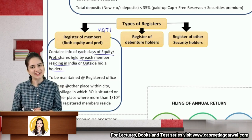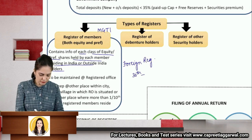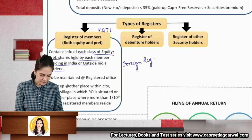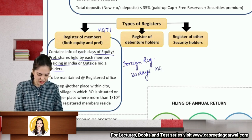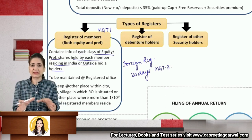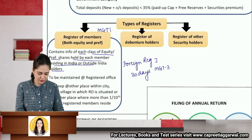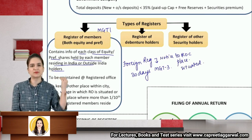You can also maintain a foreign register if authorized by your articles. Within 30 days of maintaining it, you must inform the ROC in Form MGT-3, specifying the place where the foreign register is situated.